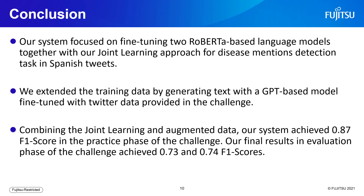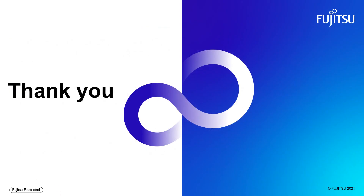In conclusion, our system focused on the fine-tuning of two RoBERTa-based language models together with our joint learning approach for disease mention detection in Spanish tweets. We used GPT-2 to extend the training data. By combining joint learning and augmented data, our system achieved an F1 score of 0.87 in the practice phase of the challenge, and in the final evaluation phase we achieved strict F1 scores of 0.73 and 0.74. Thank you very much for your attention.